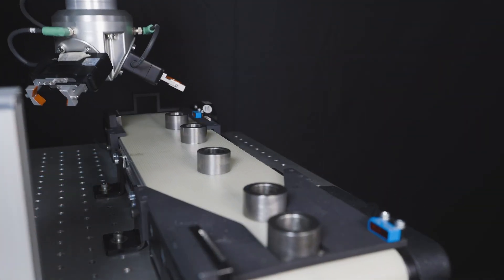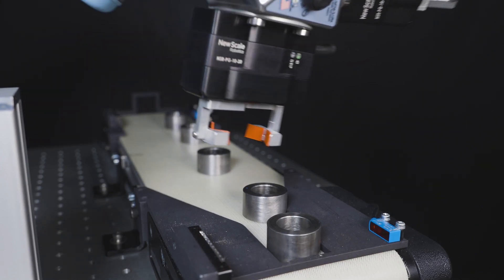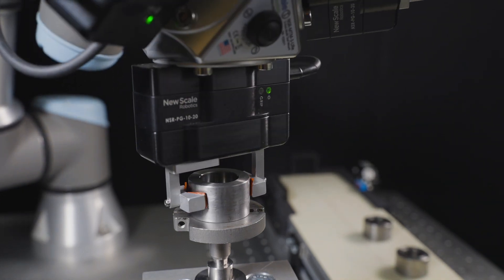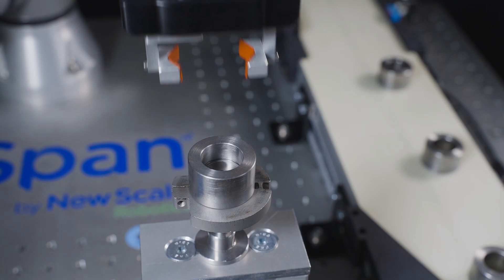The part is fed by a conveyor to a pickup location where the first gripper caliper picks it with fingertips optimized for loading the bore gauge, which measures the inner diameter of the part.